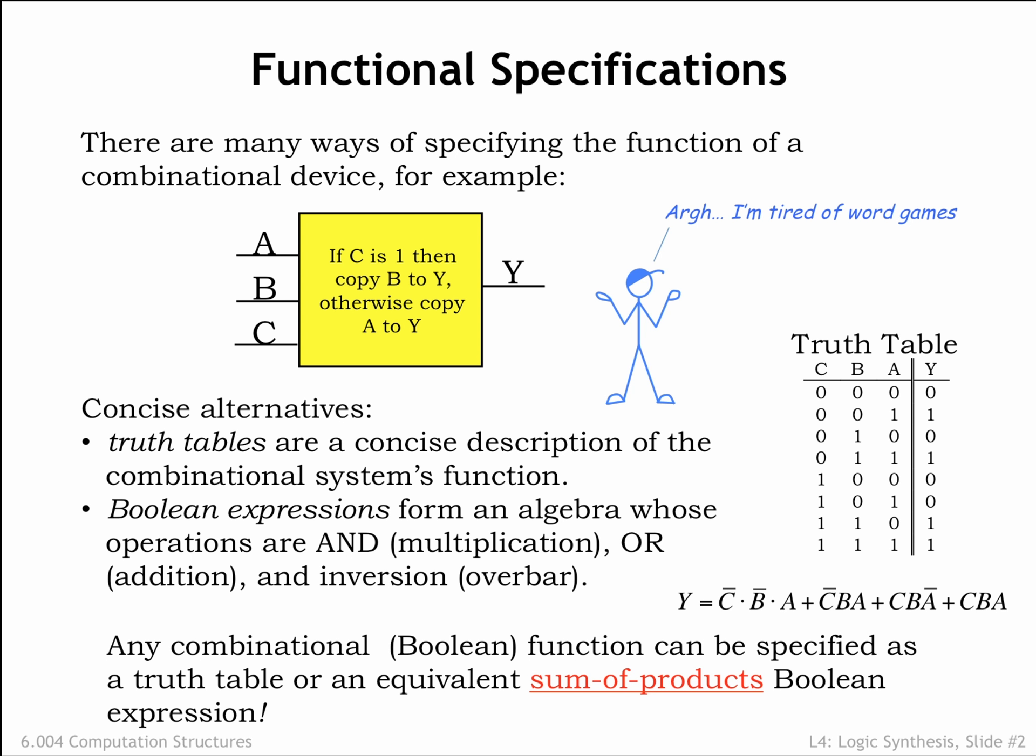We can go the other way, too. We can always convert a truth table into a particular form of Boolean equation called a sum of products. Let's see how!